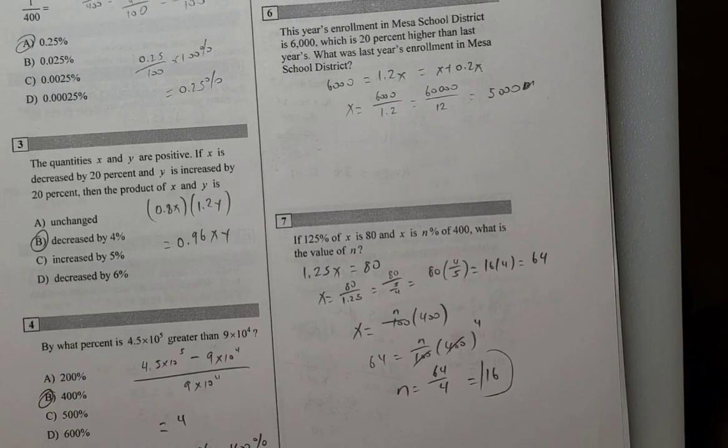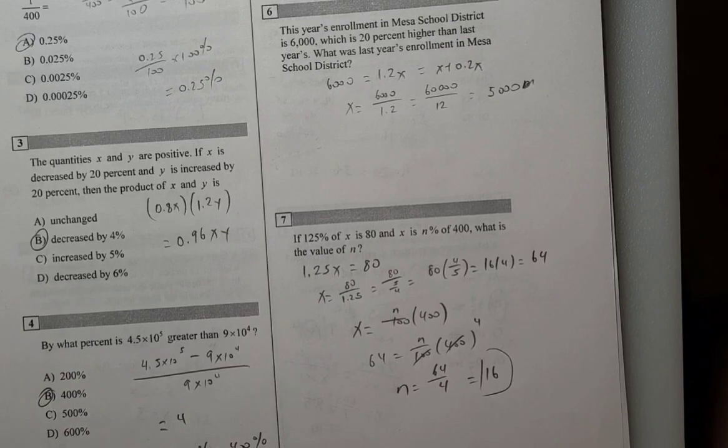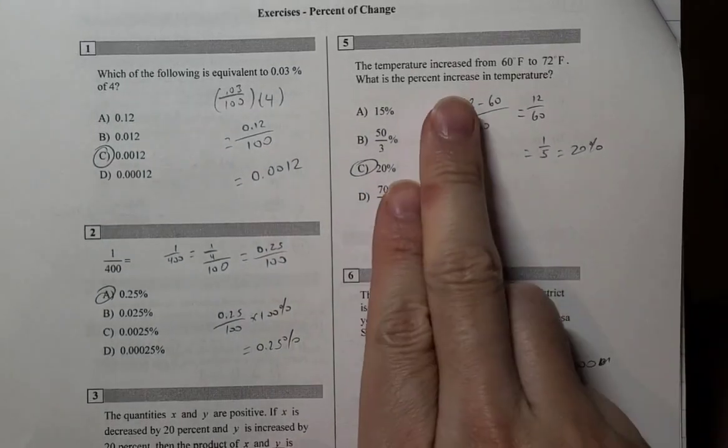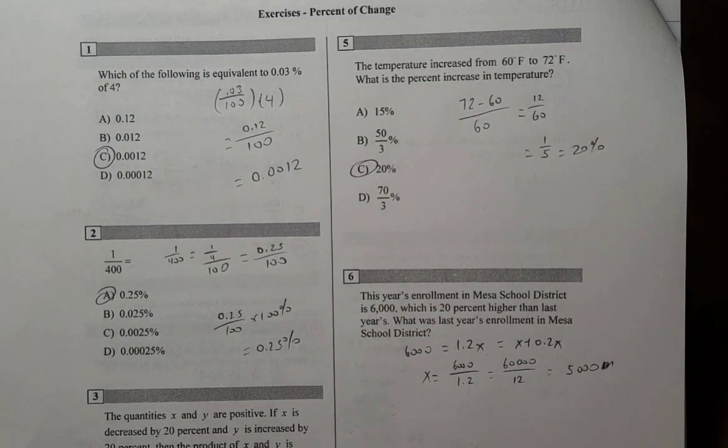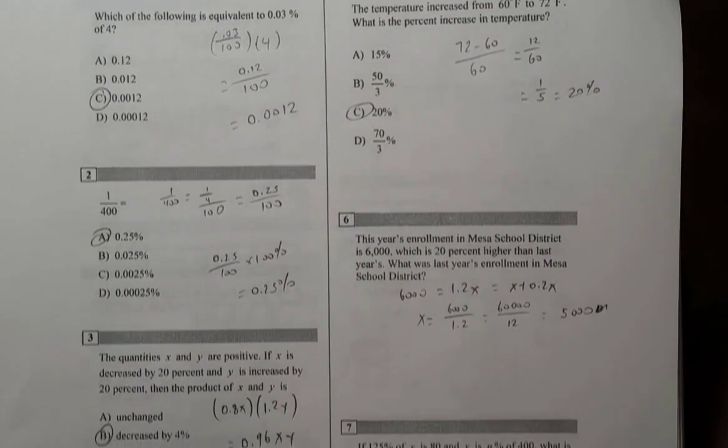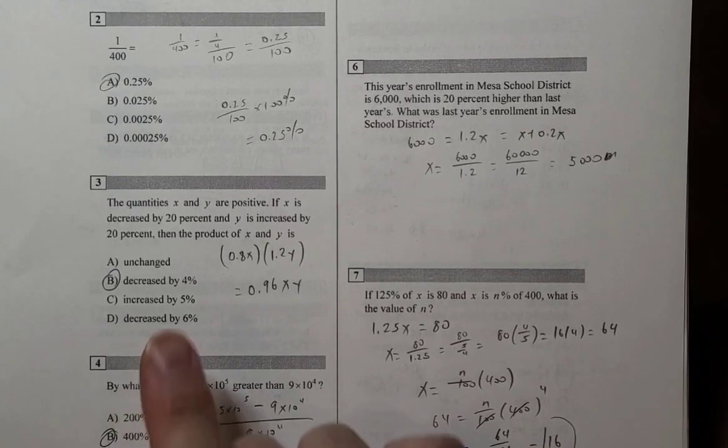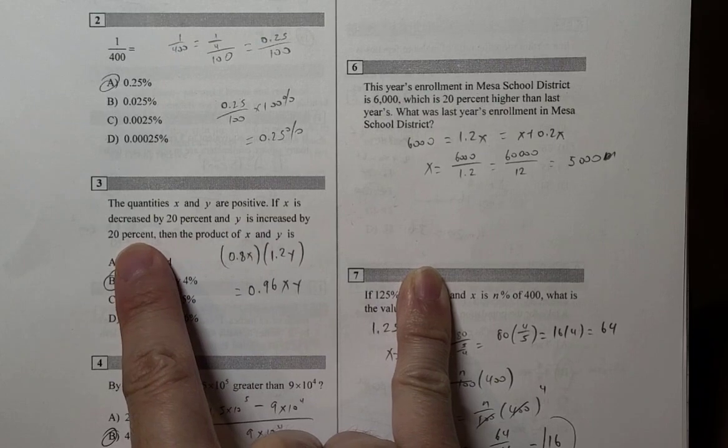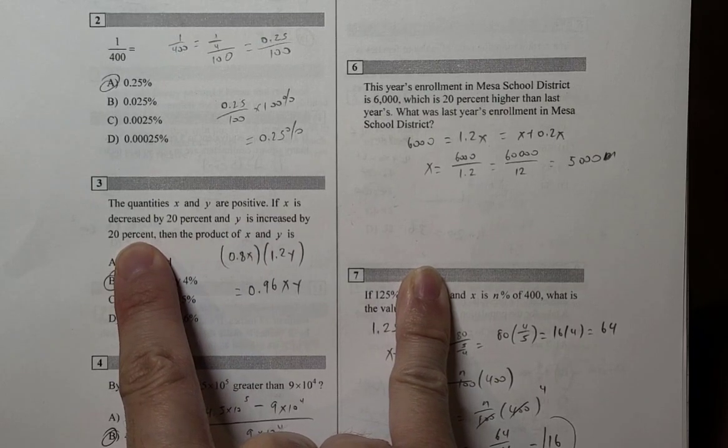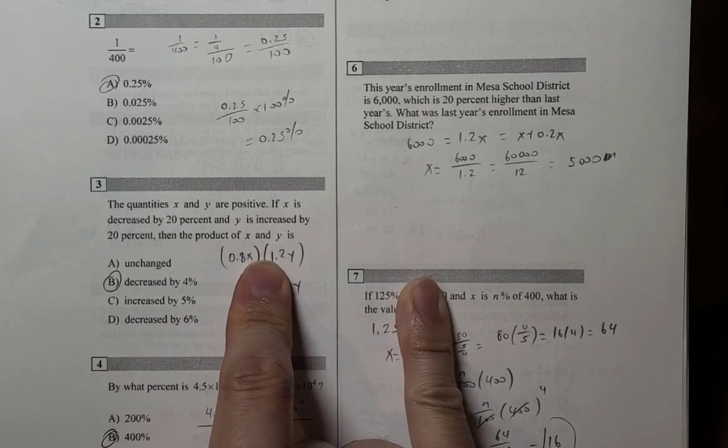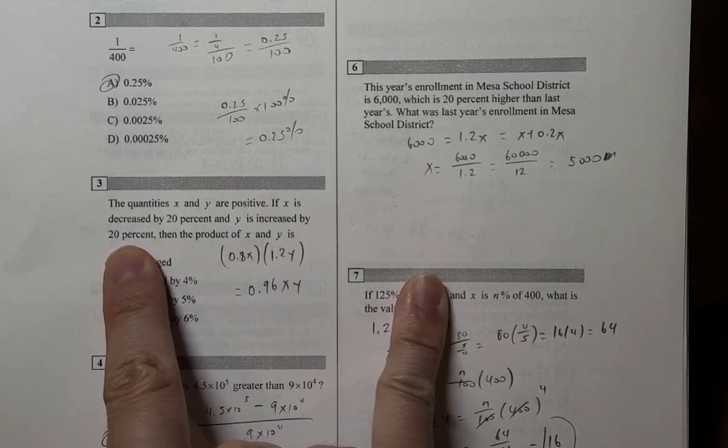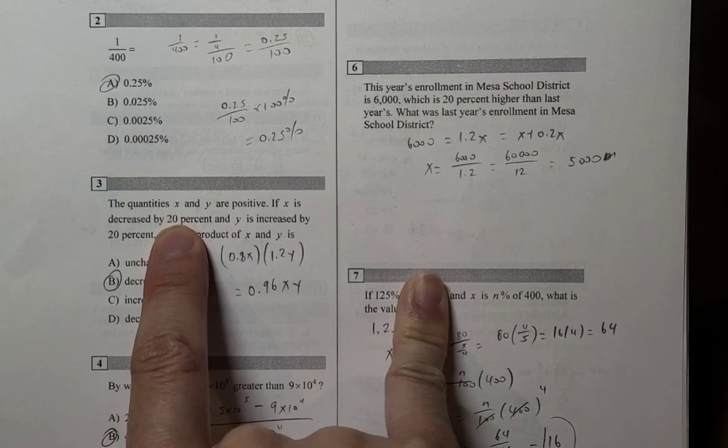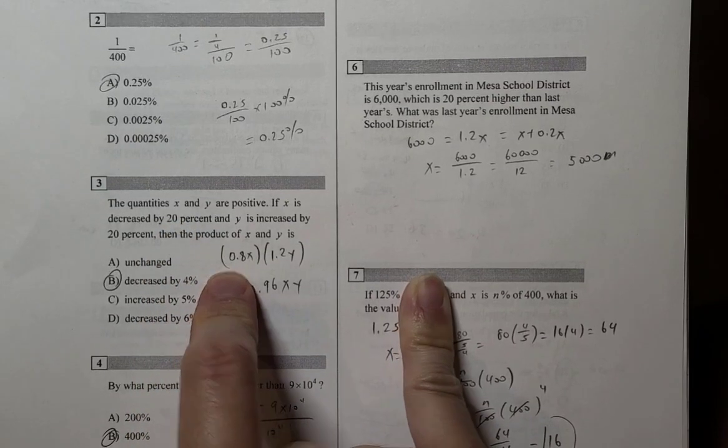That's it for this problem set. So, once again, the key idea is percent change is final minus initial over initial. And then percent increase and decrease if it's increased by some percent is 1 plus that percent, like 1.2. And if it's decreased, then it's 1 minus that percent. So, 0.8. Things like that.